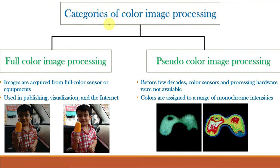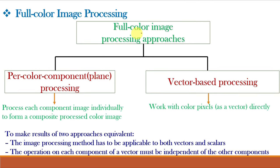We know from our previous video classes that color image processing can be full color image processing or pseudo color image processing. Pseudo color image processing we have learnt in the previous video class. In this video class, we will be learning full color image processing. The full color image processing approaches can be divided into two major categories: per color component processing or per color plane processing, and vector based processing.